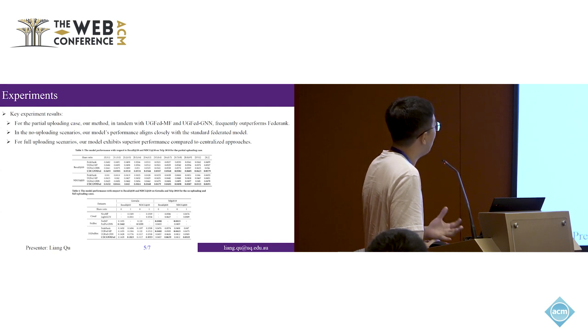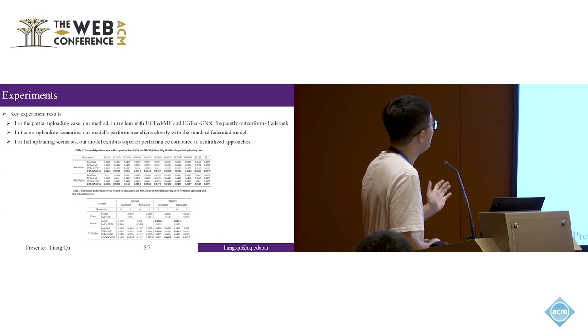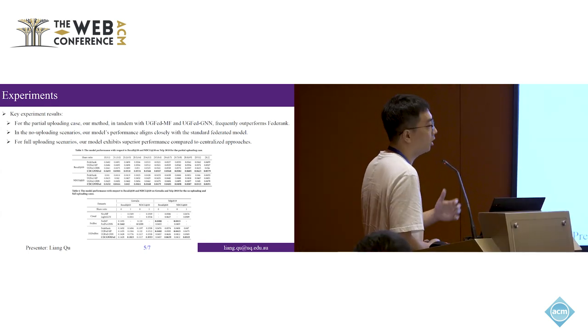From the results, we can find that for the partial uploading case, our method and our two variants frequently outperform FedRec. I forgot to mention FedRec—this baseline has similar ideas with us, but it doesn't allow users to directly share raw data to the server. Instead, it allows users to control the percentage of gradients or parameters to the server, not the raw data. That's the difference between this method and our method. For the no-uploading scenario, our method performs closely with the standard federated recommendation model, because there is no shared data available.